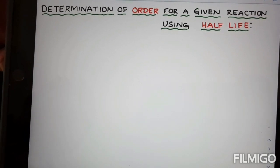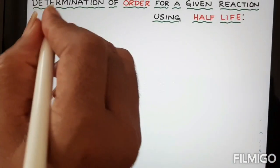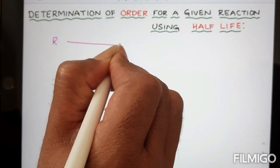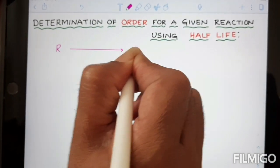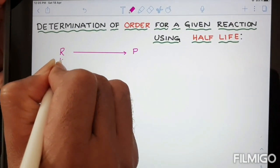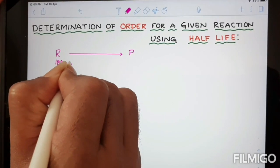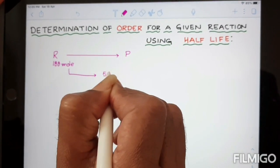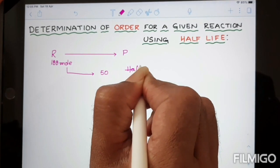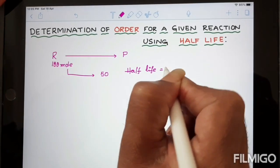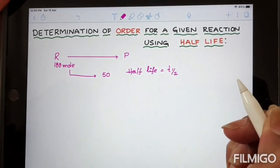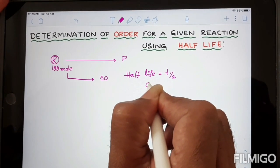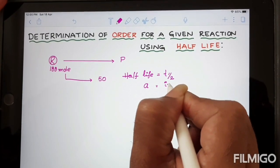First, students want to know what is half-life. I am taking a reactant that is converted into product. For convenience, I am taking 100 moles of the reactant. The time taken to reduce 100 moles to 50 moles is called half-life — the time taken to complete half of the reaction. It is represented as T-half. The initial concentration of the reactant is represented as small 'a'.